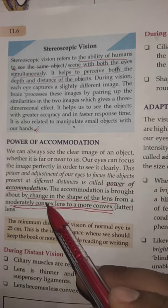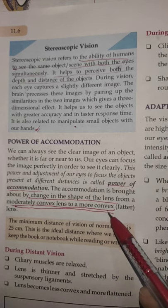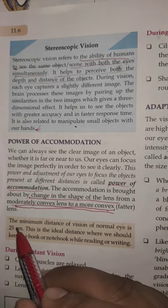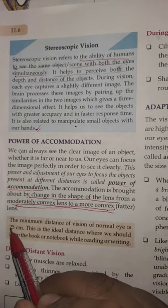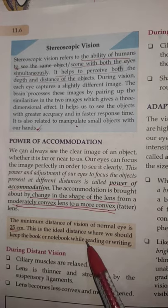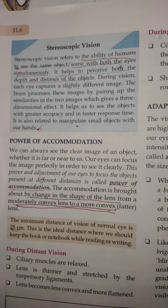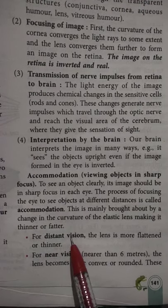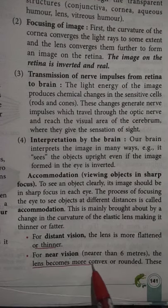It is brought about by a change in the shape of the lens, from a moderately convex lens to a more convex, fatter lens. The minimum distance of vision of a normal eye is 25 centimeters. This is the ideal distance where we should keep the book or notebook while reading or writing. For distant vision, the lens is more flattened or thinner. For near vision, the lens is more convex or rounded.